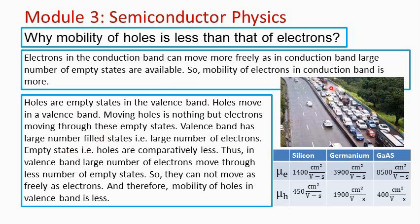So the valence band is like the road on the right side — a large number of vehicles with insufficient road space, so the speed of the vehicles is obviously less. Similarly, with a large number of electrons and few empty states, the ease with which electrons move through those empty states is less, and therefore the speed achieved is also less. So the movement of holes in the valence band is not as free as the movement of electrons in the conduction band, and therefore the mobility of holes in the valence band is less.